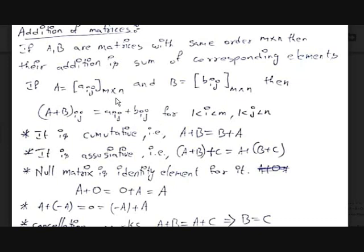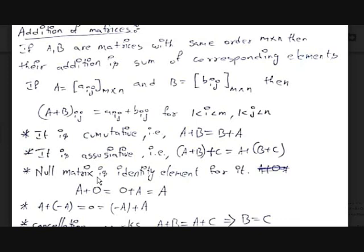This means the element in the i-th row and j-th column of matrix A plus the element in the i-th row and j-th column of matrix B, for all 1 ≤ i ≤ m and 1 ≤ j ≤ n. Its properties are: it is commutative, meaning A plus B equals B plus A. It is associative, meaning (A + B) + C equals A + (B + C). And the null matrix is the identity element — meaning adding the null matrix to any matrix does not change it.